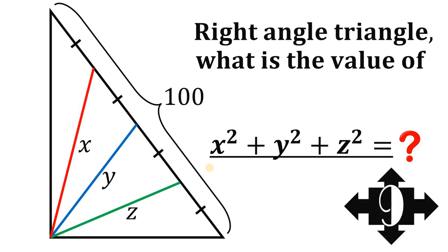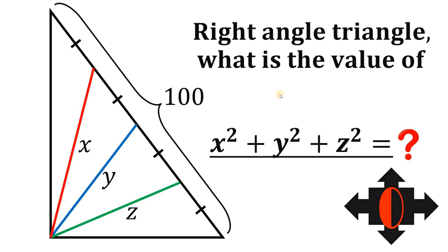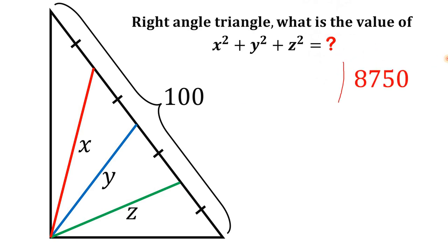You can pause this video if you want to give this problem a try. Now let's answer this question together. Before we move on to the solution, here is the answer: the answer is 8,750. That is the value of x squared plus y squared plus z squared. Now, the question is how do we get 8,750?